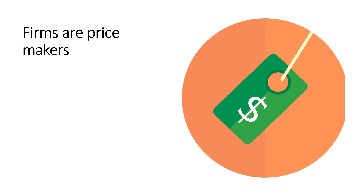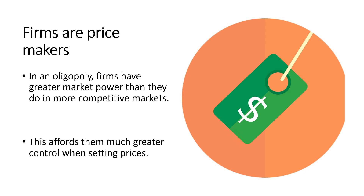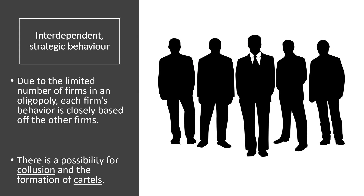Unlike highly competitive markets, firms in the oligopoly structure have more market power to control and set price. We consider them price makers. One of the most intriguing features of the oligopoly is the level of interdependence between competing firms. Since there are a few large firms dominating the industry, their behavior is interlinked. They must closely watch each other and carefully respond to the actions of competitors.